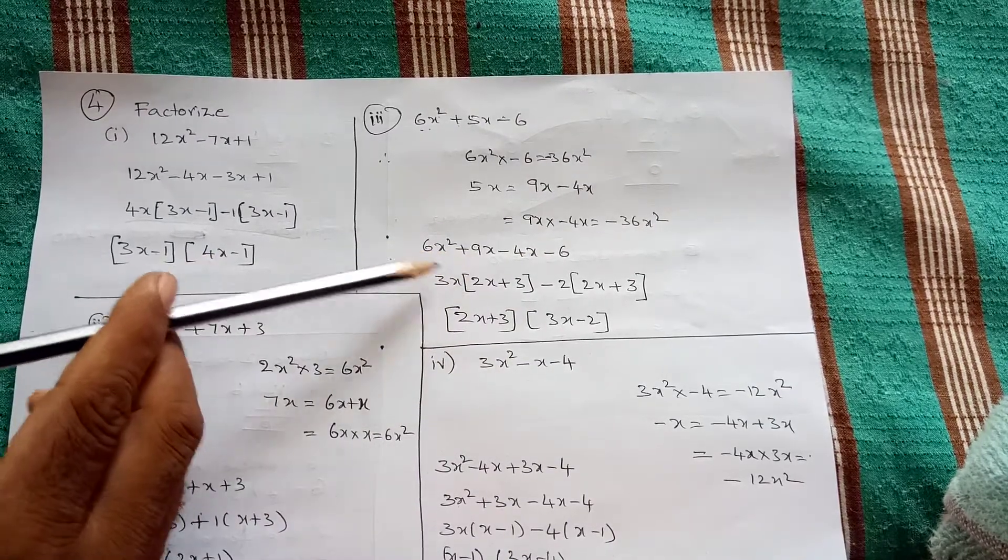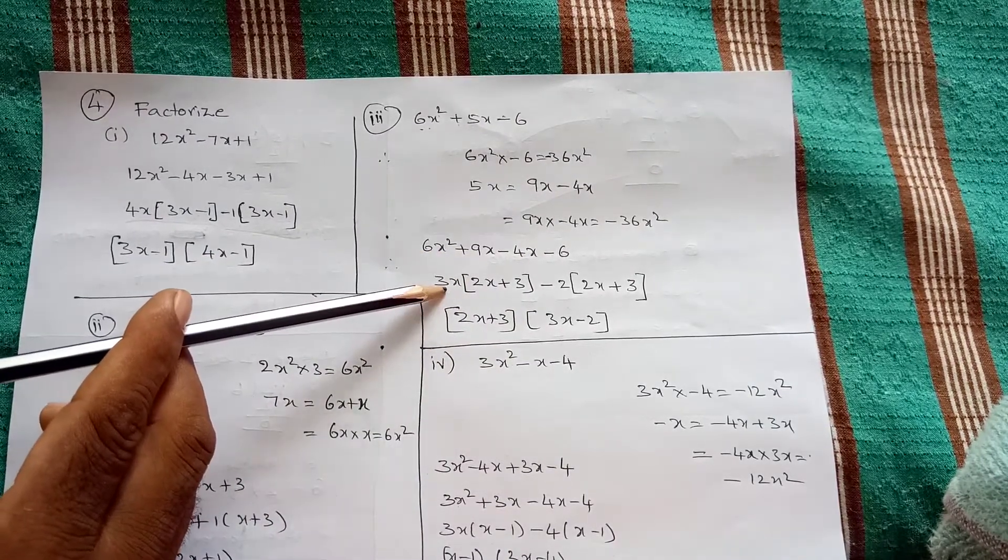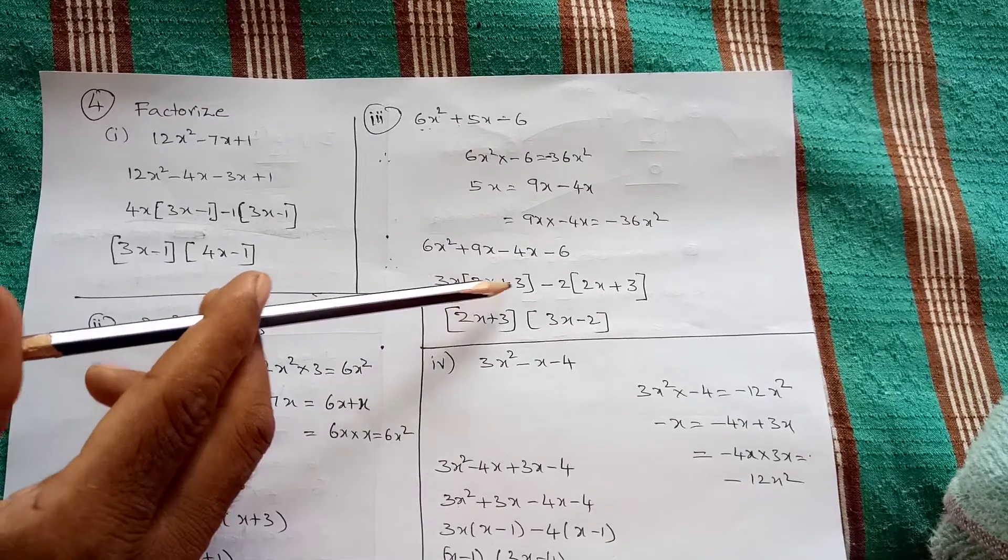From the first two terms take 3x common, therefore 2x plus 3.